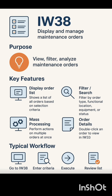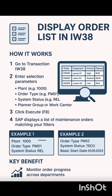To display an order list in IW38, go to transaction IW38 and enter selection parameters like plant, order type, system status (such as REL), planner group, or work center. Then click the Execute button or press F8. SAP will display a list of maintenance orders matching your filters. For example, for plant 1000 and PM01 type orders, you will get a list of maintenance orders. Similarly, if you enter system status as TECO and order type as PM02, the filtered results will reflect those criteria.